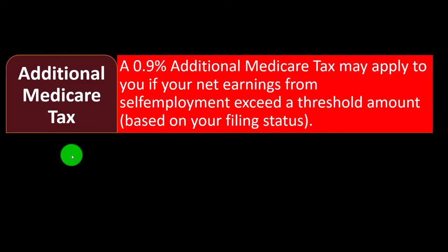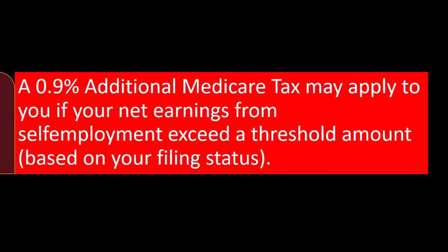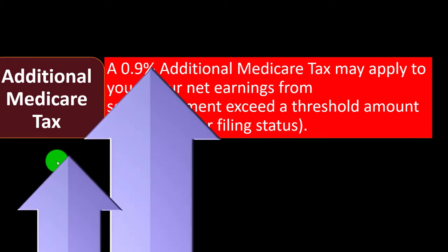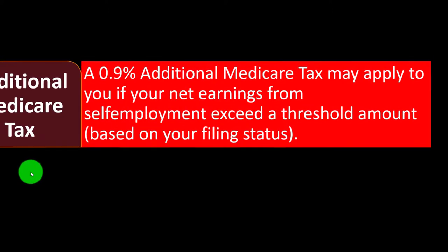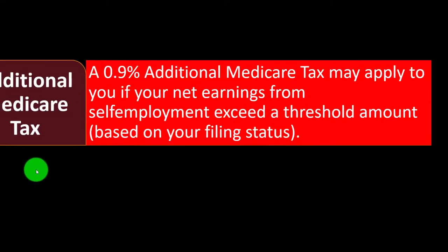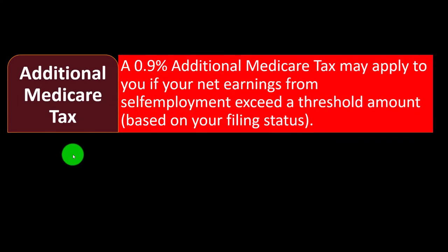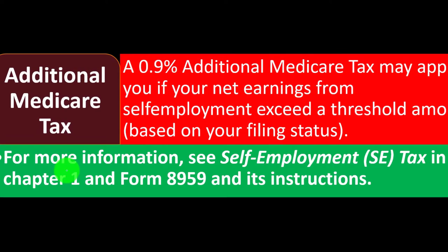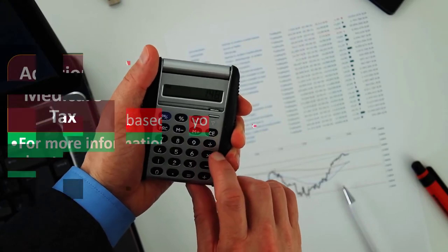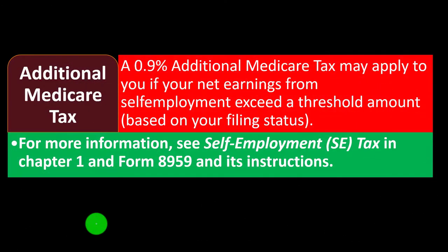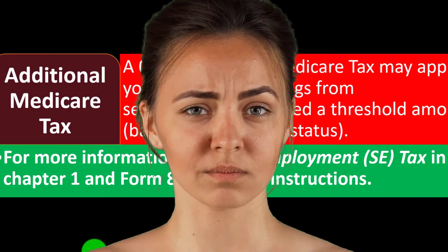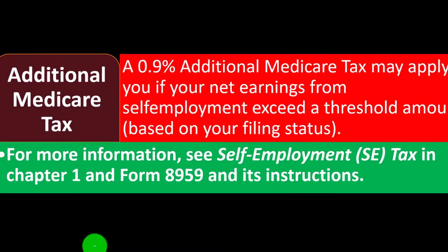Additional Medicare tax: a 0.9% additional Medicare tax may apply if your net earnings from self-employment exceed a threshold amount based on your filing status. So you have different thresholds based on filing status where the Medicare tax goes up. Because Medicare is more of a safety net program, it goes up once you exceed a certain threshold — whereas Social Security, which seems more like a retirement program, is capped. These rules can get confusing quickly once you layer in progressive tax rates and changing thresholds.